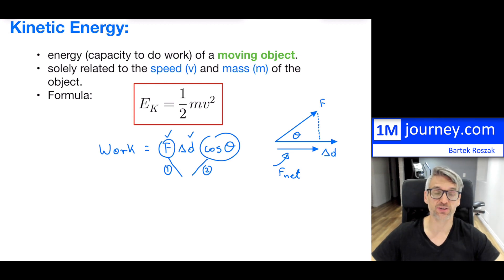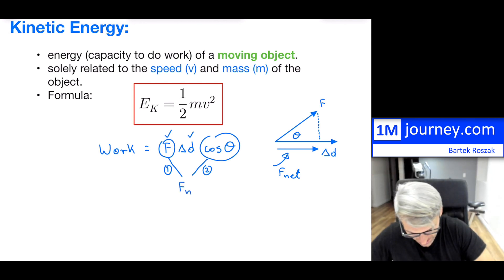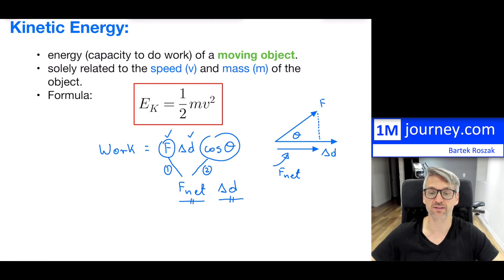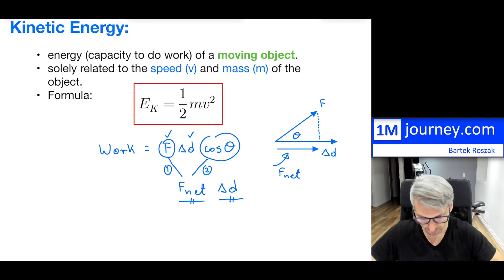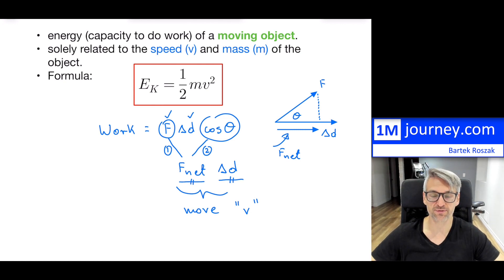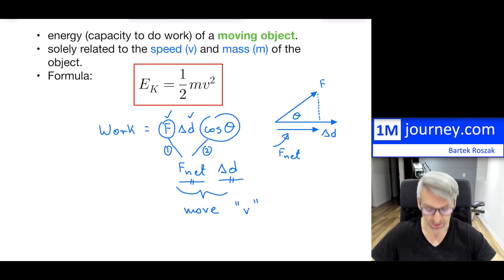The net force in the direction of the displacement is simply F net as we have here. So the work equation comes down to: what is the magnitude of my F net and what is the magnitude of my displacement? If I have those, I can calculate the amount of work being done in order to get this particular object to move at a particular speed V.